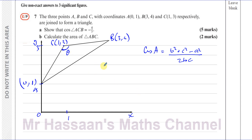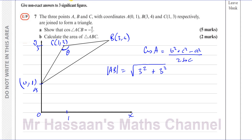Let's start with AB. Using the length formula, the change in x is 3 minus 0, which is 3, and the change in y is 4 minus 1, which is also 3. So AB = √(3² + 3²) = √(9 + 9) = √18 = 3√2, because √18 = √(9×2) = 3√2.